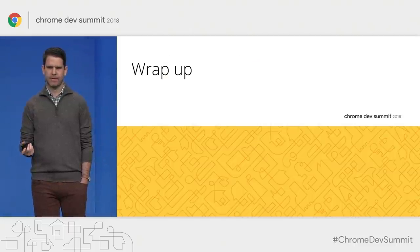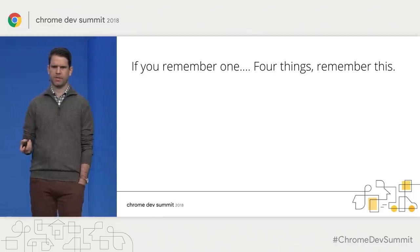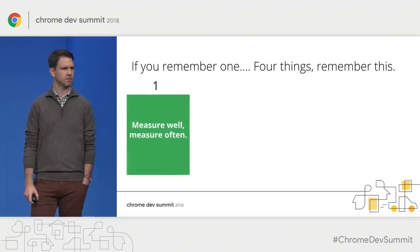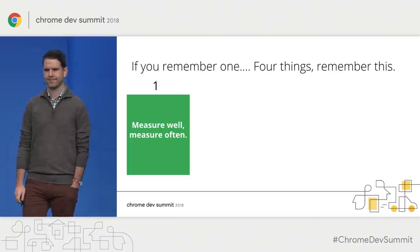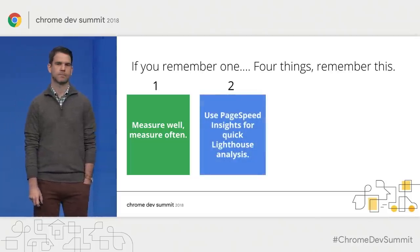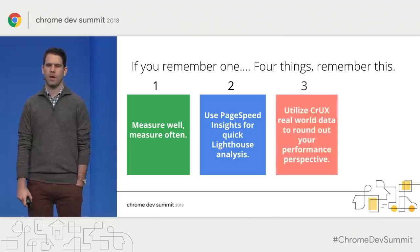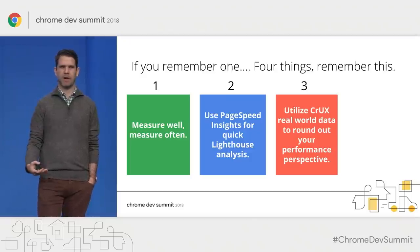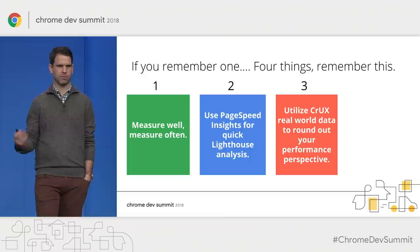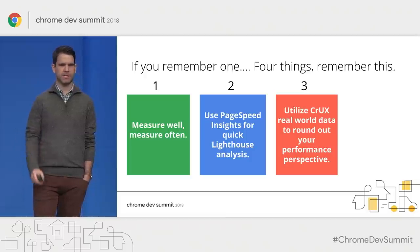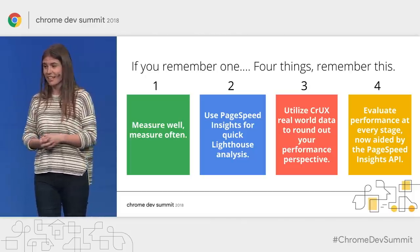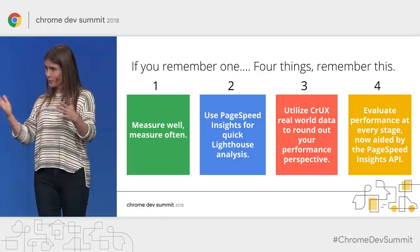To wrap up, if there are four things to take away: first, measure well and measure often — you can't improve what you don't measure. You can now use PageSpeed Insights for quick Lighthouse analysis. CrUX real-world data really helps round out your view of what's happening with your users and helps understand different percentiles where users are feeling pain and frustration. And finally, to evaluate performance at every stage, you can now check out the API. Go use it.